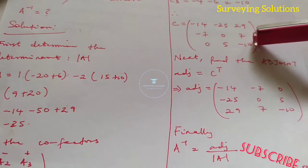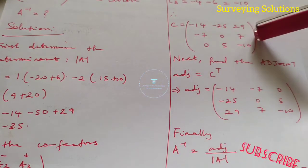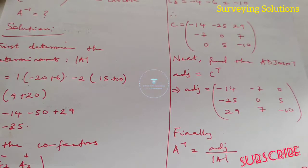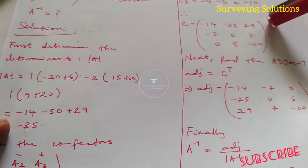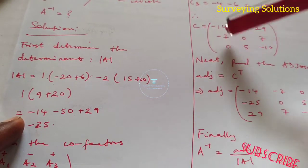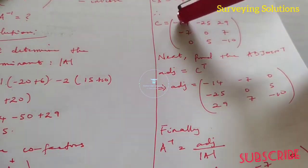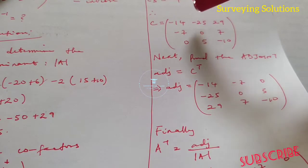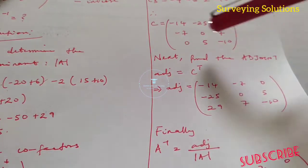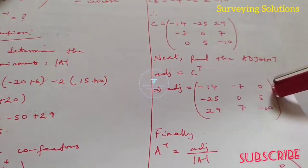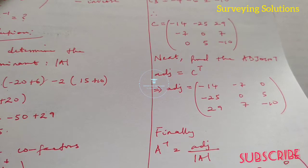The next thing is we find the adjoint. The adjoint of a matrix is the transpose of the cofactor matrix. Transpose means you change the rows to columns and the columns to rows. So row one — minus 14, minus 7, 0 — becomes column one: minus 14, minus 25, 29. Then instead of row two being minus 25, 0, and 5, column two is now minus 7, 0, and 7. The third column becomes 0, 5, minus 10.